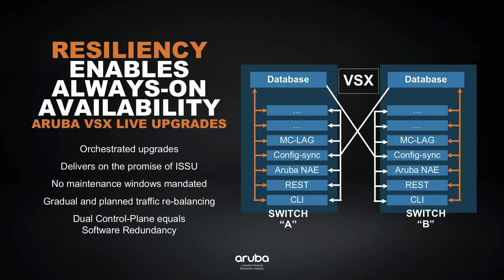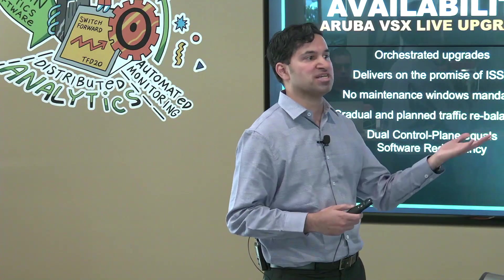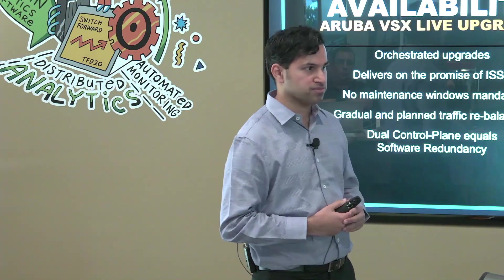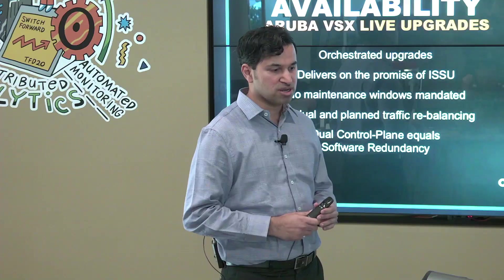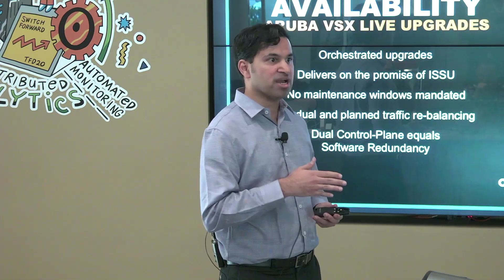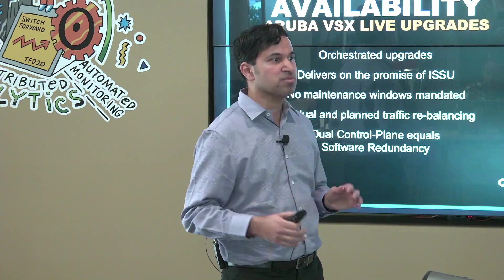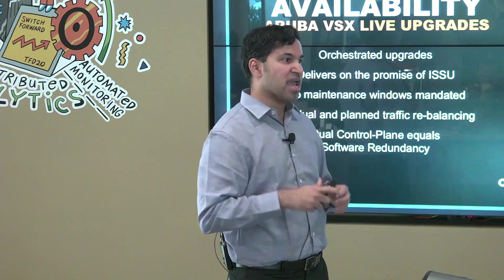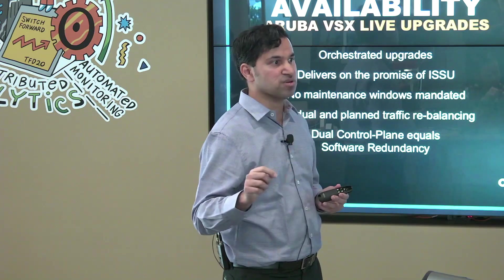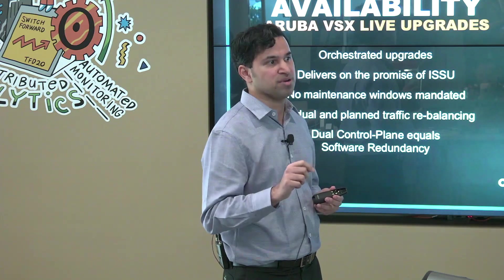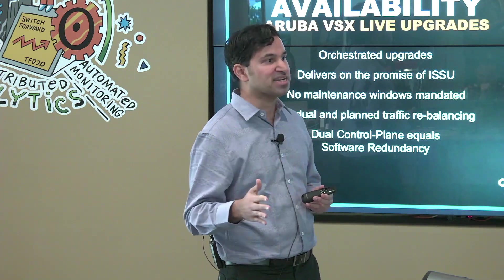That upgrade process takes anywhere from 7 to 10 minutes depending upon the system, and there will be forwarding during those 7 to 10 minutes because it's a sequential upgrade — one chassis stays on and forwards traffic. You can continue to receive routing updates. This year during our Atmosphere conferences, we had the core running VSX and during the keynote demo sessions we live upgraded our core with several thousand live attendees.